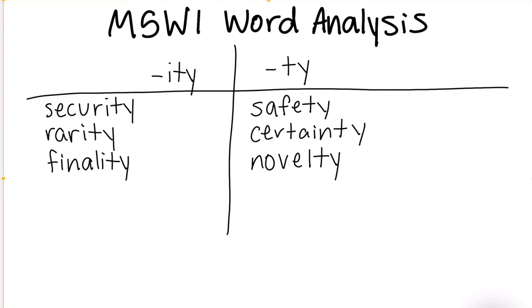So here we have some words. Today's skill is going to be to identify the base word. If we added the suffix I-T-Y to this word and created the word security, what do we think the base word is? The base word is secure. We dropped the E and added the suffix I-T-Y.